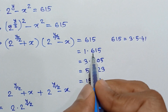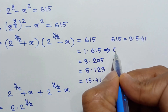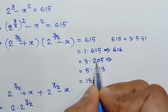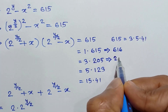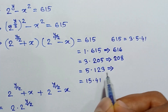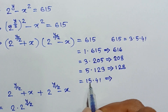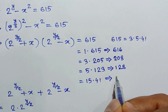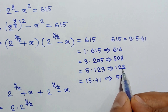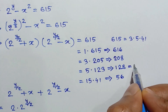Checking each factor pair sum: 1 + 615 = 616, 3 + 205 = 208, 5 + 123 = 128, and 15 + 41 = 56. Among these, only 128 is a power of 2, specifically 2 to the power 7.